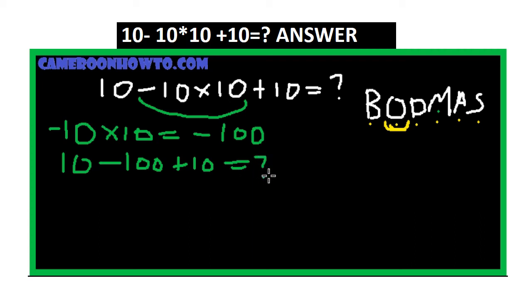Okay, so if we follow BODMAS again, we are going to do addition. So addition here is this 10 plus this 10, then now we minus 100. So 10 plus 10 is equal to 20.